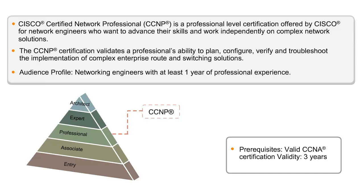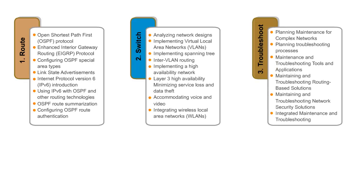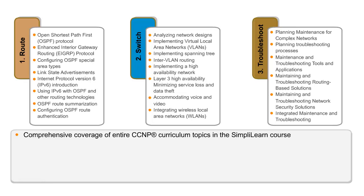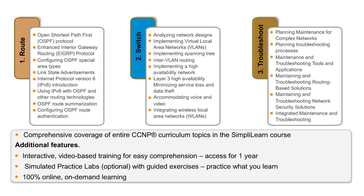The curriculum for the CCNP certification is broadly divided into three areas: Route, Switch, and T-Shoot, or Troubleshoot. This online course provides a package covering all three areas. Hands-on practice exercises are also available separately through an online simulator. Please take a moment to go through the course topics to get a better understanding of the curriculum.